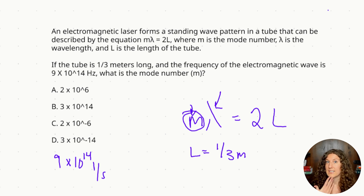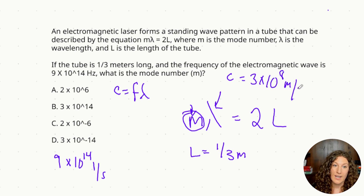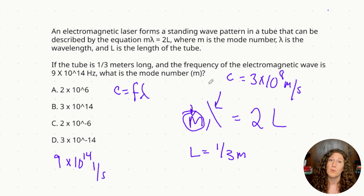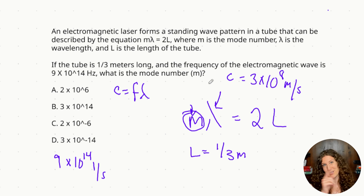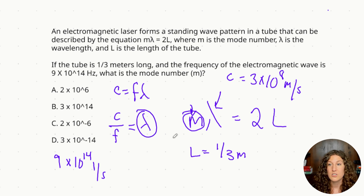To convert between wavelength and frequency for light, we use c equals frequency times wavelength. The speed of light is a constant we're expected to know: 3 × 10⁸ meters per second. If this question referred to sound waves, they would give us the speed of sound — which is around 330 meters per second in air, much slower than light. We rearrange to get wavelength equals speed of light over frequency, which allows us to solve for wavelength and then plug in to find the mode number.